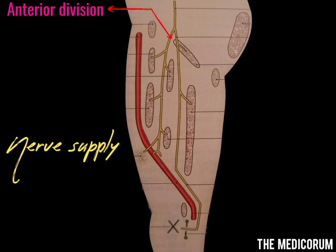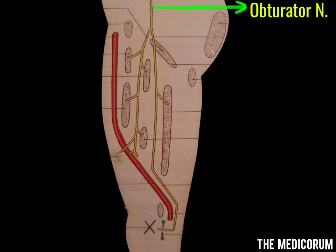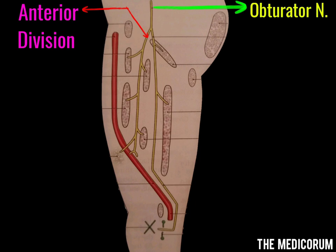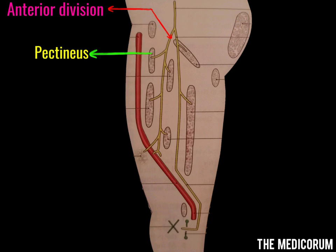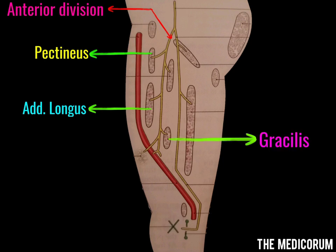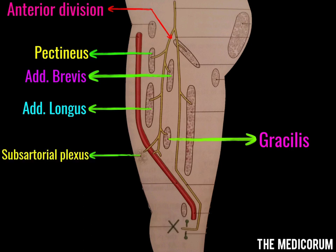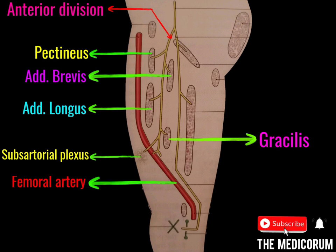The anterior division supplies the pectineus muscle, then the adductor longus, and then the gracilis. The adductor brevis is also supplied by the anterior division, though in some cases the posterior division can also supply the adductor brevis. It then comes down and supplies the subsartorial plexus, and finally ends by supplying the femoral artery in the adductor canal.